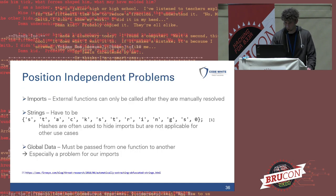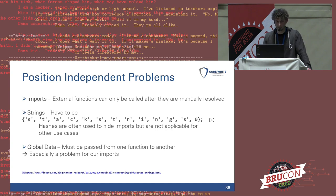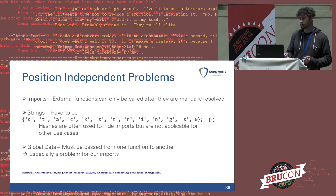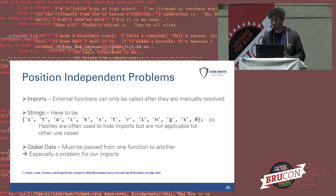This brings us to three problems. First, external functions can only be used after they are manually resolved. Second, you cannot write strings as you're used to — you have to write them as character arrays pushed onto the stack at runtime, which is why this technique is also called stack strings. Third, we have no global data — everything we want to use in more than one function must be passed from function to function. This is especially a problem for imports: imagine a bunch of WinAPI calls you want to use in multiple functions — you'd need to pass all of them as pointers or recreate them in every function.